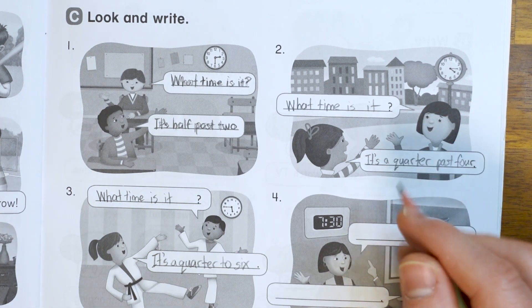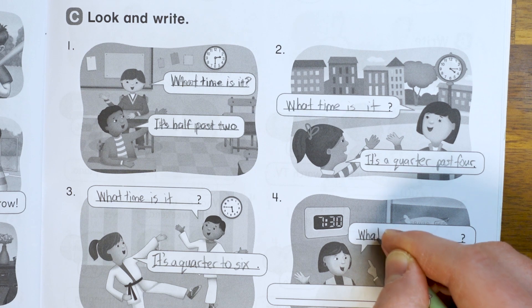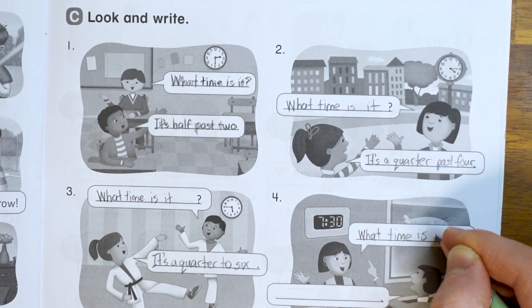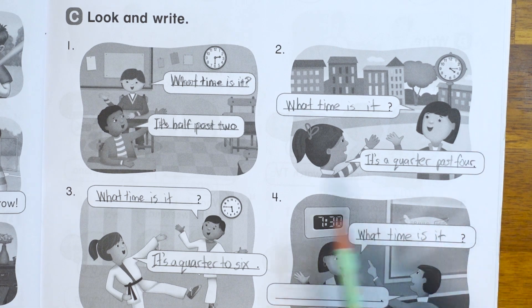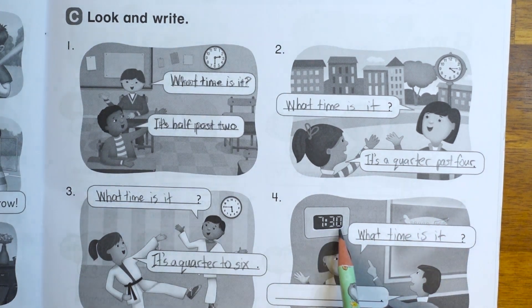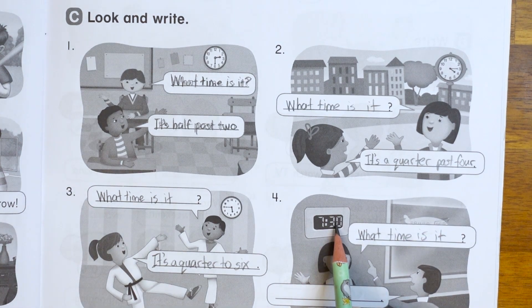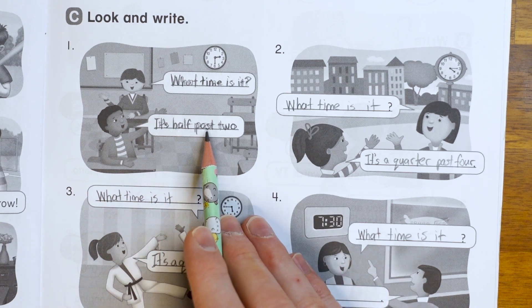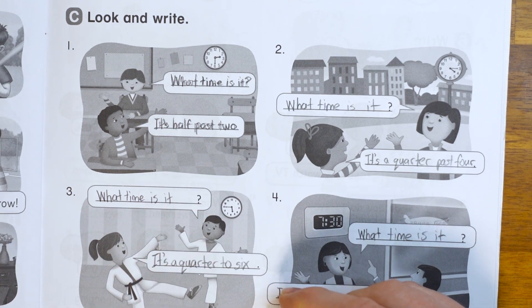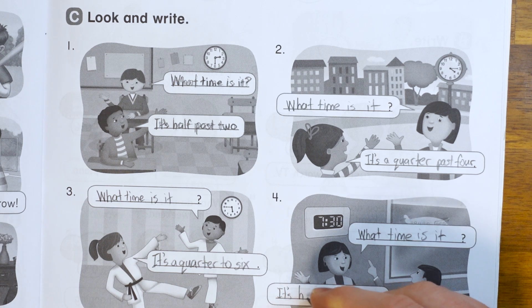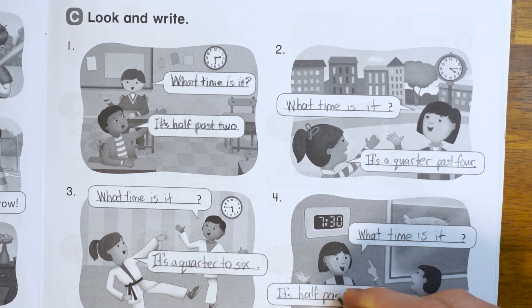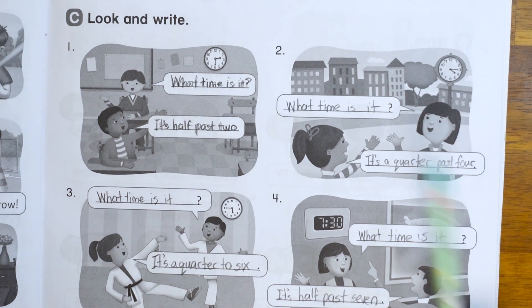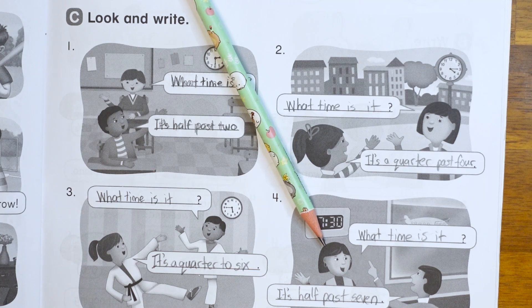And the last one, again, the same question. What time is it? Okay. And the digital clock this time says 7:30. And we already did one of those. We can say 30 as half past. So we can say it's half past seven. Oh, it's half past seven. And done. This whole page is finished. Good job.